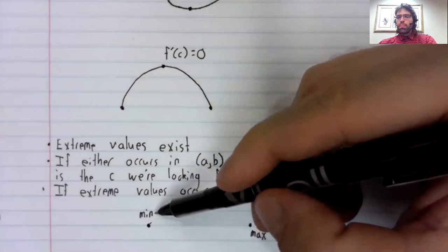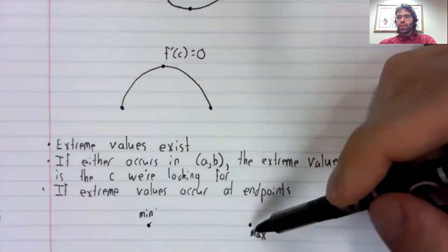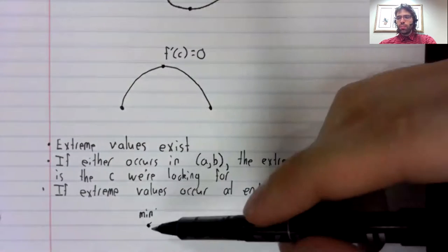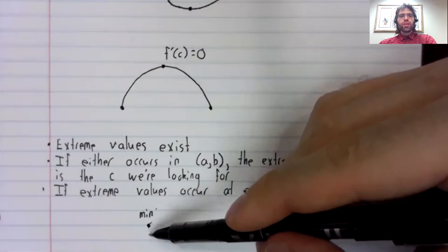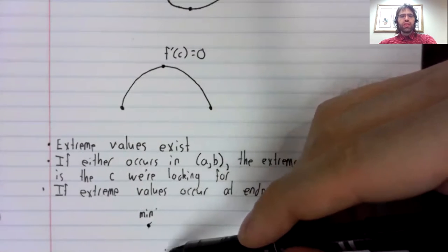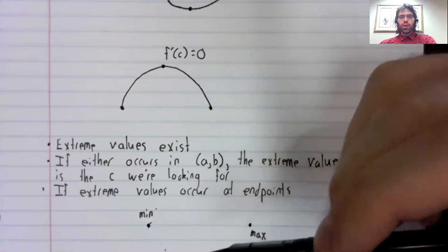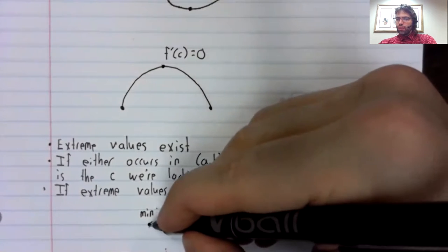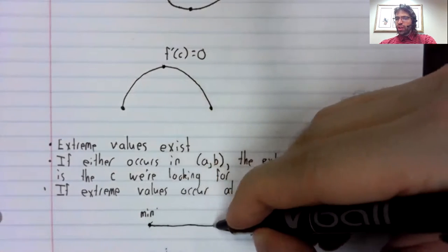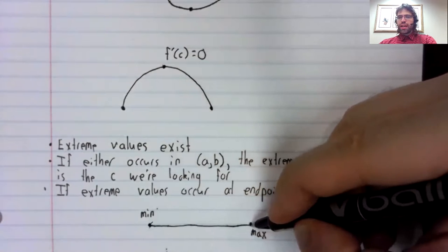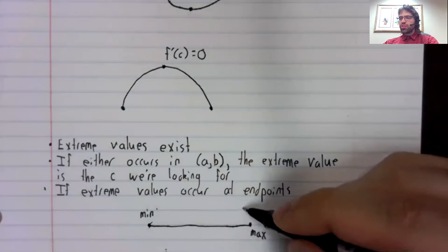It can't go up, because then it would be above the maximum. It can't go down, because then it would be below the minimum. In this case, the function has to be constant.